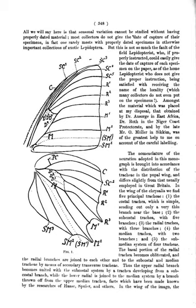Rhizophagy: feeding on rhizomes. Saltatorial: adapted for leaping or jumping. Sarconecrophagy: feeding on dead bodies of vertebrates. Sapromycetophagy: inhabiting decaying matter and consuming mycetes growing inside or cultivating them for feeding. Saprophagy: feeding on decaying organic matter. Scape: the proximal segment of the antenna. Schizophagy: feeding on ground remains of plants and animals.